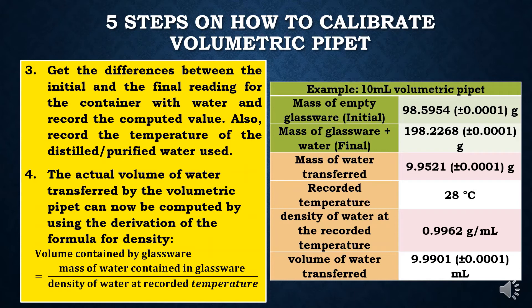Step 4: the actual volume of water transferred by the pipette can now be computed using the derivation of the formula for density. Volume is equal to the computed mass or weight of water transferred by the glassware divided by the density of water at the specified temperature. Since the recorded temperature of water is 28 degrees Celsius, with a corresponding density of 0.9962 grams per ml, 9.9521 grams divided by 0.9962 grams per ml gives 9.9991 ml, which is the volume of water transferred by the volumetric pipette.